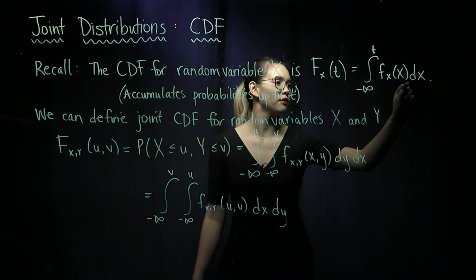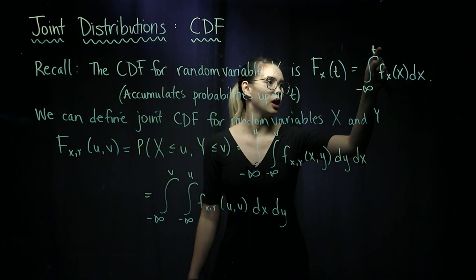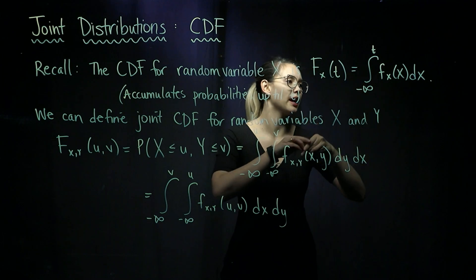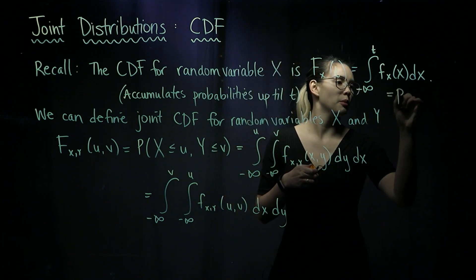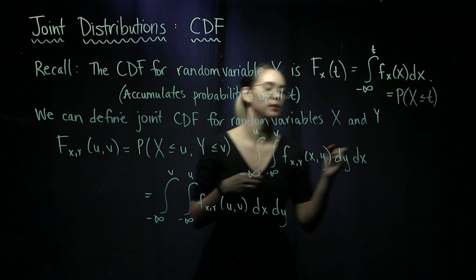We integrate over our PDF from negative infinity up to the point we're evaluating at. This tells us the probability that X is less than or equal to t.